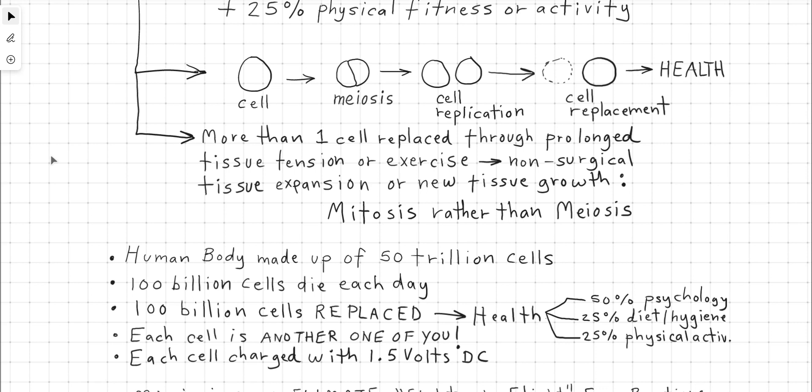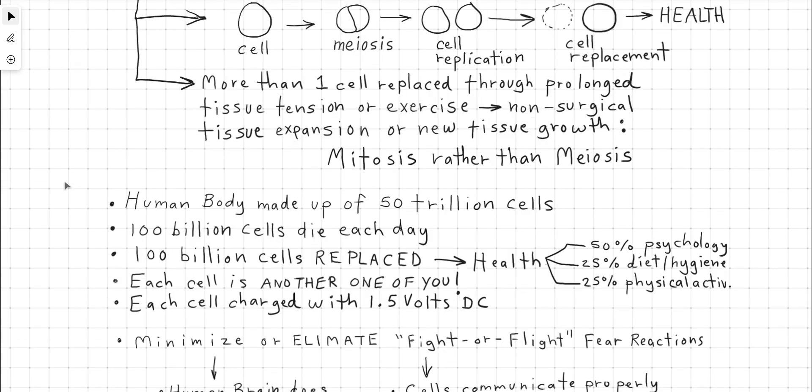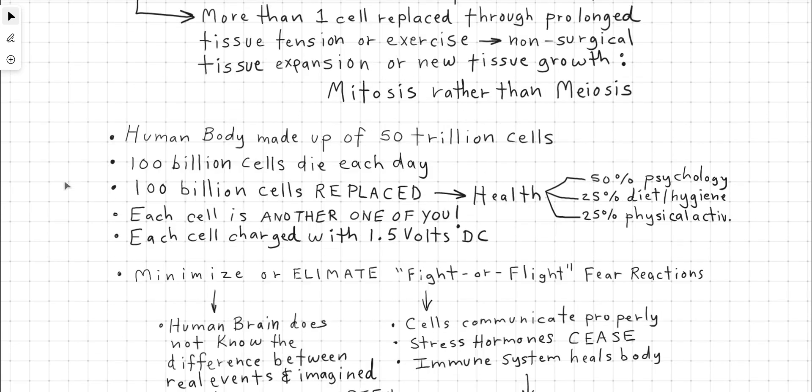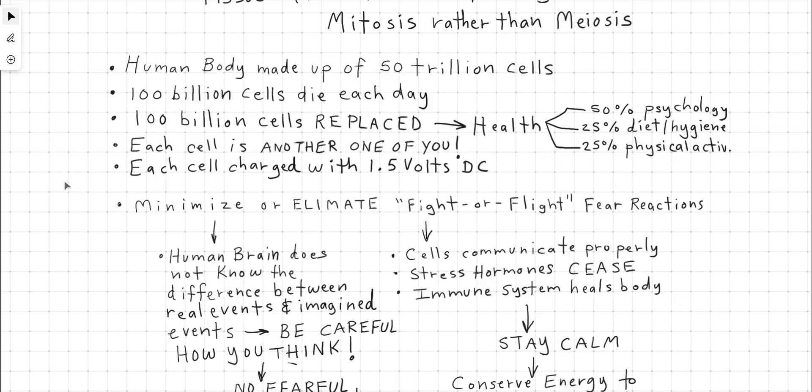If we are replacing more than one cell at a time through prolonged tissue tension or exercise, this is also equal to non-surgical tissue expansion, which results in new tissue growth. This is when meiosis then functions as mitosis when you make more than one cell at a time. This is how you get healthy tissue growth where applicable. The human body is made up of 50 trillion cells, 100 billion cells die each day, 100 billion cells are replaced. This is what health is.